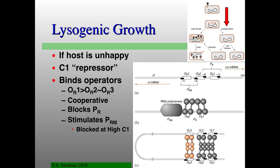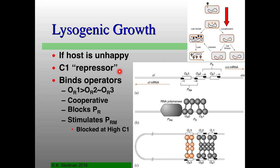This Lambda repressor is blocking PR and also at the same time blocking PL. And this is why it's a quote-unquote repressor — because it's actually activating transcription at its own promoter. So there's a positive feedback loop in terms of making sure that you have lots and lots of repressors. Repressor blocks PL and PR, giving you lysogenic replication. If you have PL and PR active, you're going to have lytic replication.